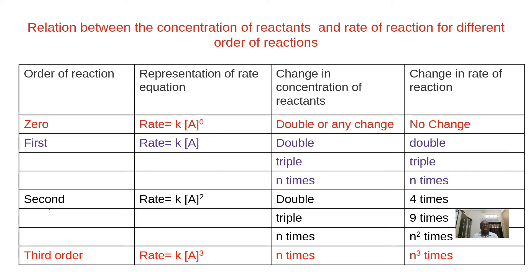For a zero order reaction, the rate equation is: rate = K[A]^0. Since anything to the power zero is 1, the rate equals K. By changing the concentration of A by any number of times — double, triple, 100 times — there is no change in the rate. The rate remains constant. Such reactions are called zero order reactions.